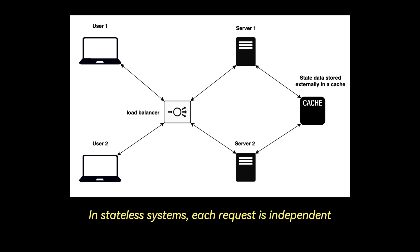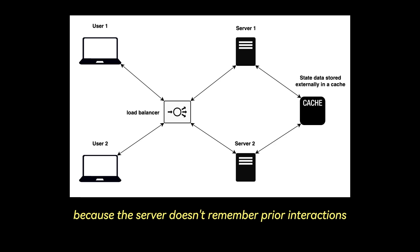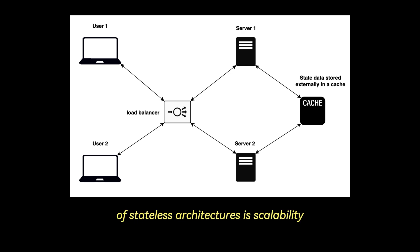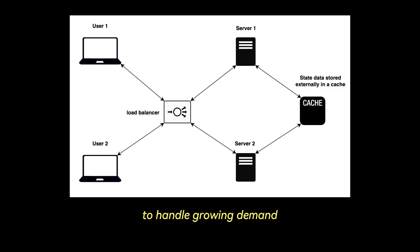In stateless systems, each request is independent. Take an API request to get current stock prices — every call must include all needed information, like authentication tokens or request parameters, because the server doesn't remember prior interactions. One major advantage of stateless architectures is scalability. Since the server doesn't retain any session data, requests can be distributed to any available server, allowing for horizontal scaling where more servers can be added to handle growing demand without complex session management.